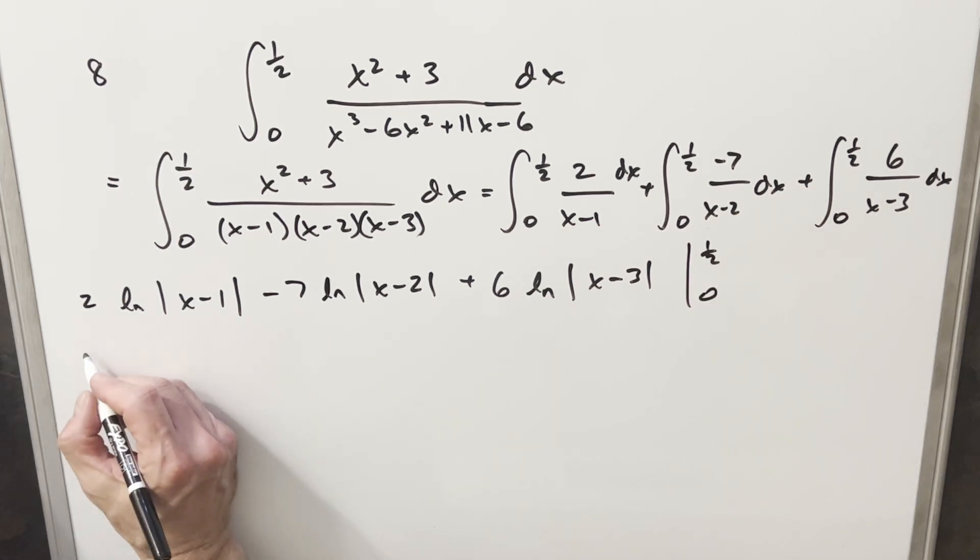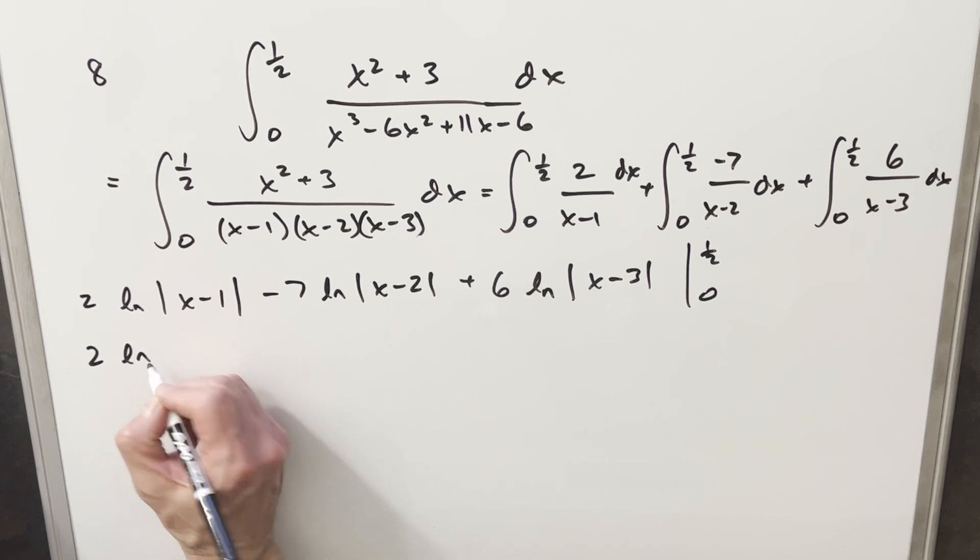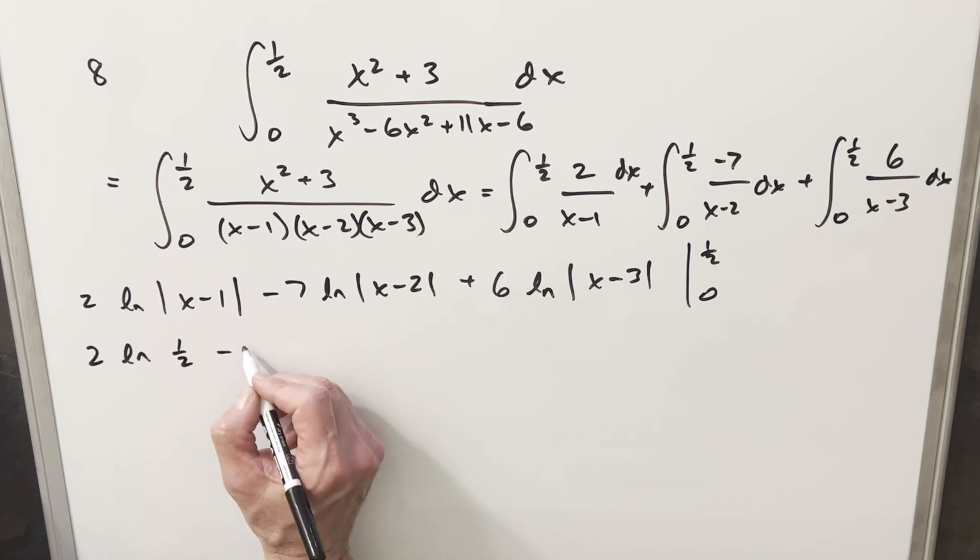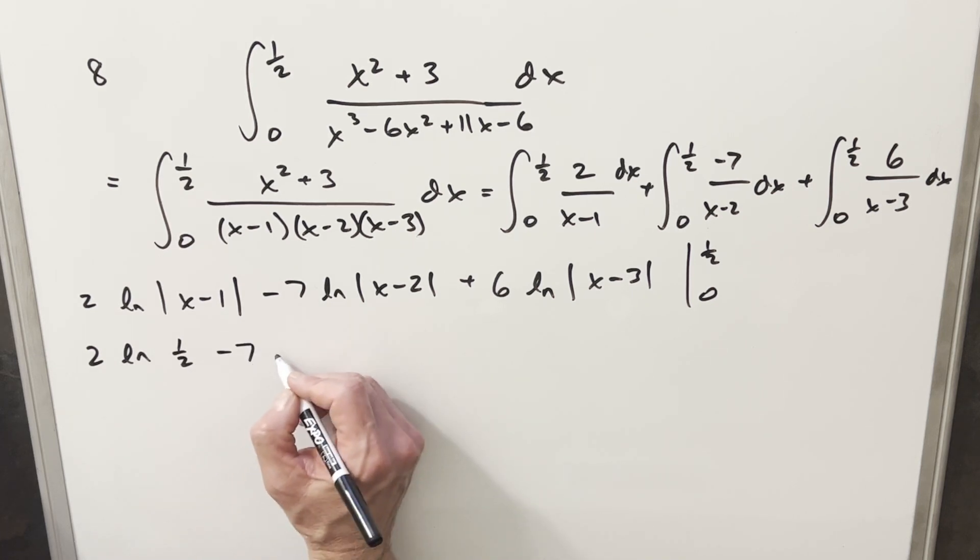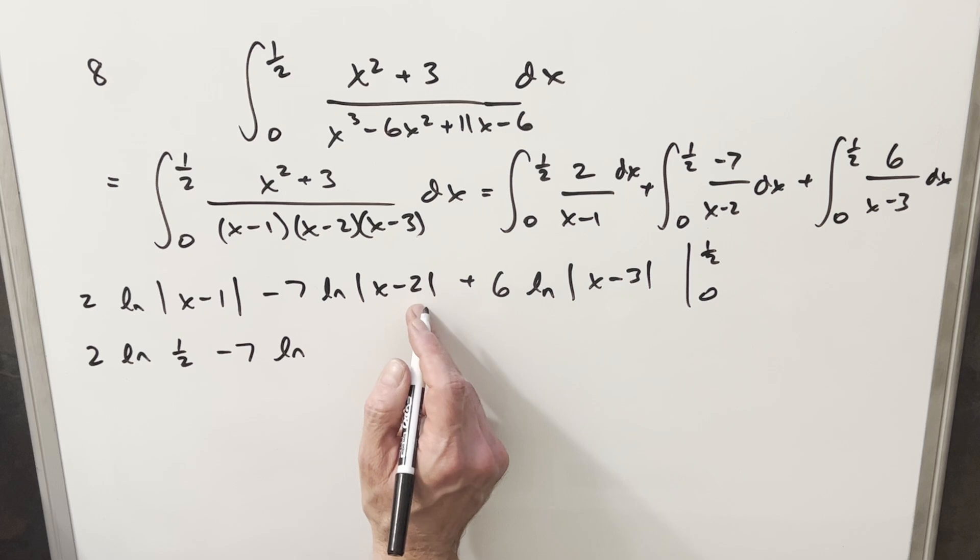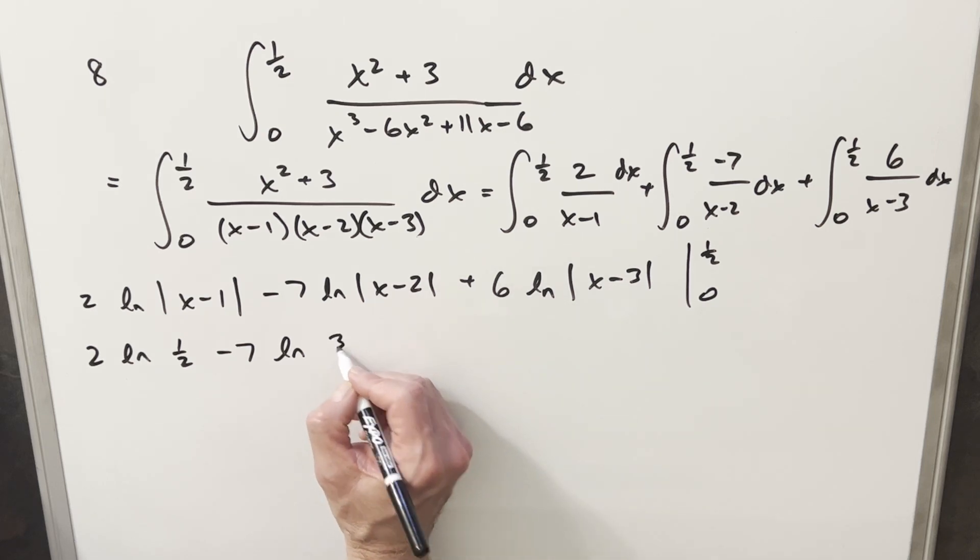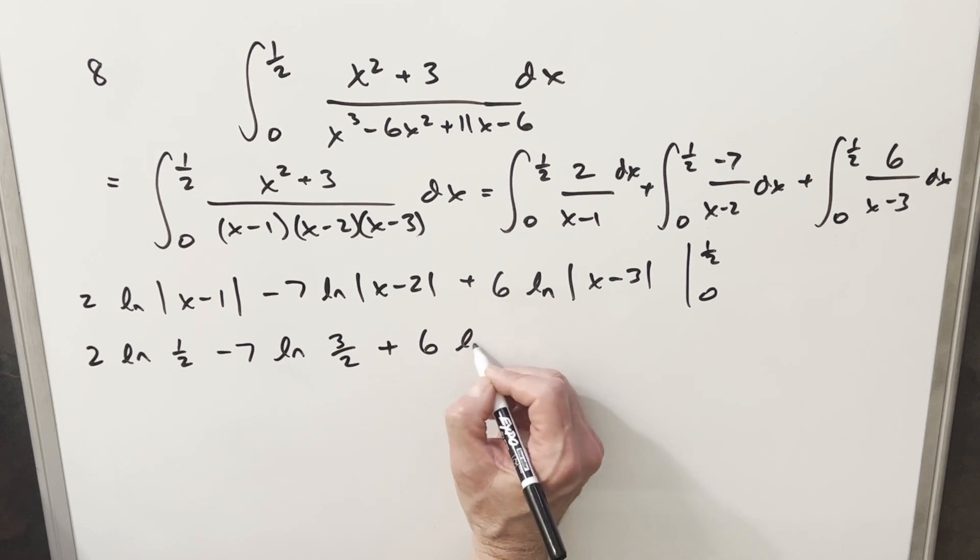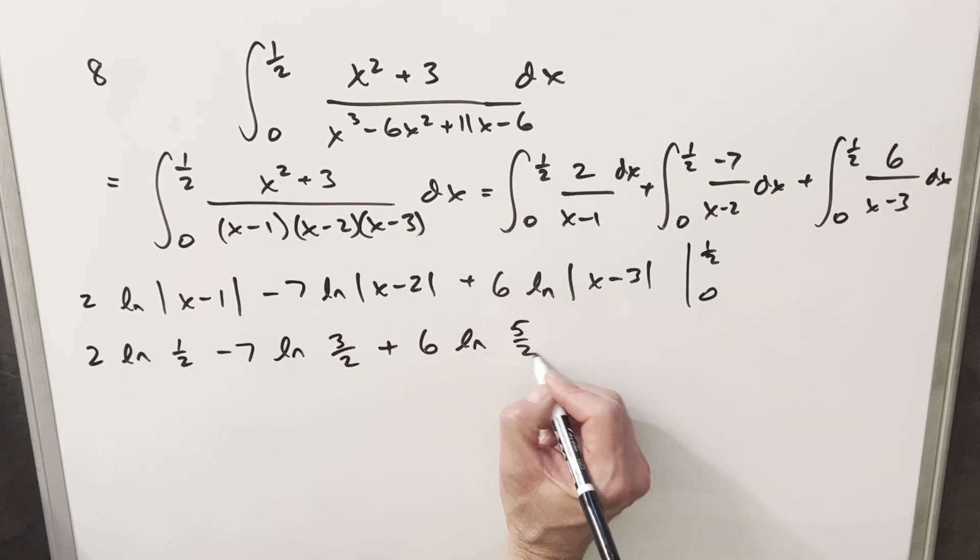And then actually the evaluation here is probably the most tedious part. So just plugging in 1/2 first, we're going to have ln(-1/2), but inside the absolute value, I'm going to write this as just 1/2. Minus 7 ln, here this is going to be -3/2. Again, absolute value is going to take care of all the negative signs. And then same thing here, this is going to become -5/2. I'll just write it as 5/2.